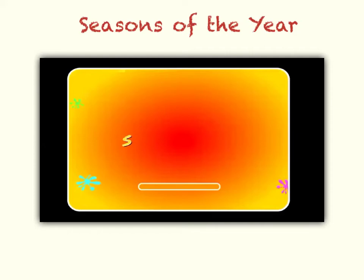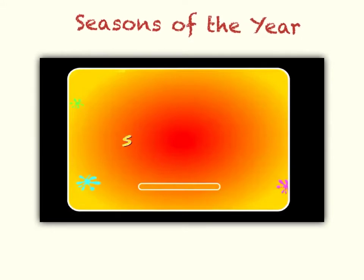In this learning teaching episode, we're going to be looking at the seasons of the year. The seasons of the year work in with the 12 months of the year. Now, in our last lesson, we looked at the 12 months in the year and we ordered those 12 months.